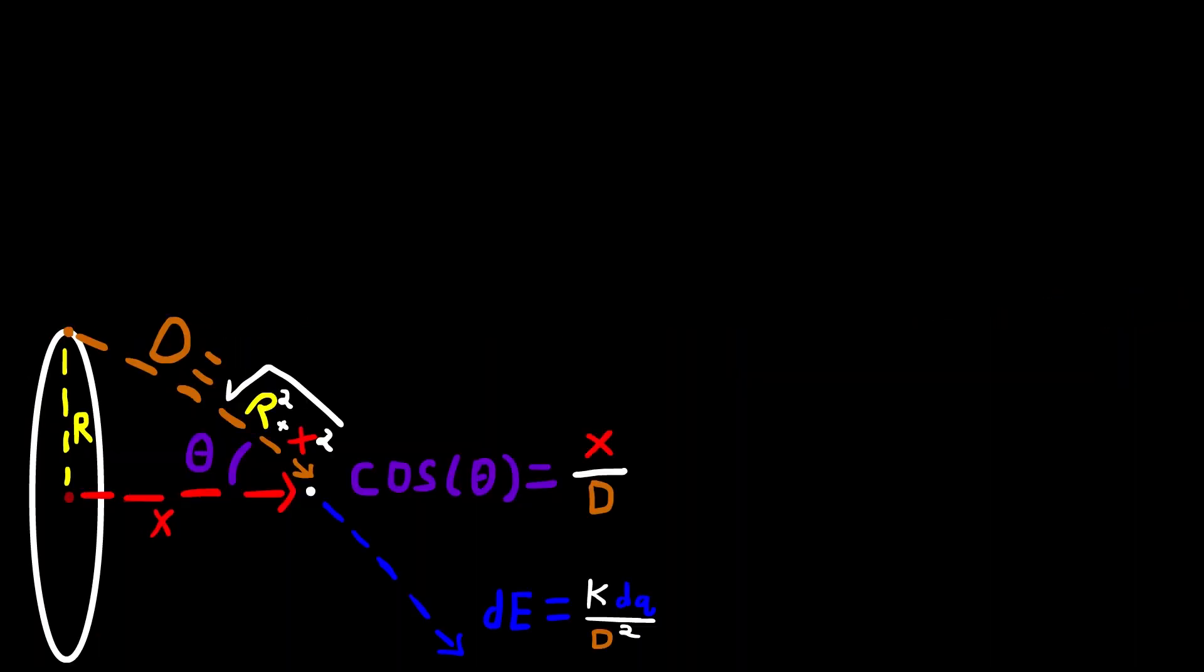Back to this. Now we will multiply the cosine of theta, or x over d, by the derivative of energy, which is equal to this.